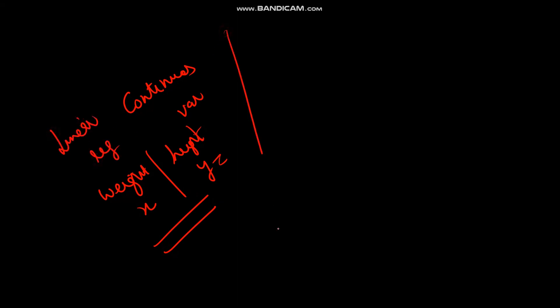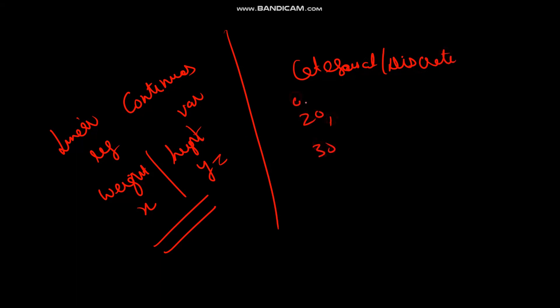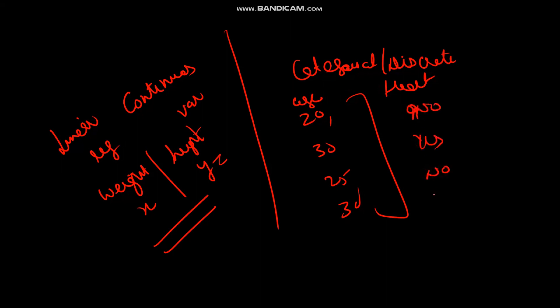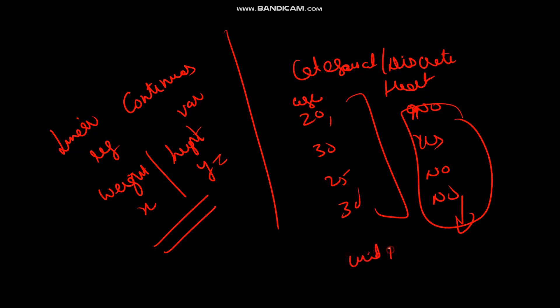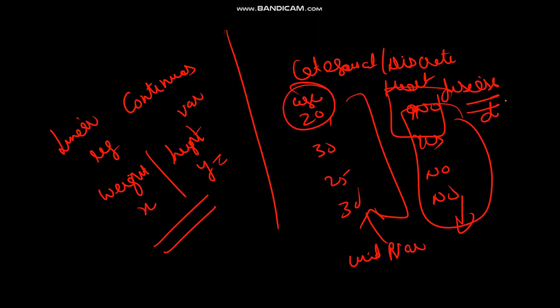To summarize: when we need to predict a continuous variable — such as calculating weight from height, where both are continuous values — we use linear regression. When we have a categorical or discrete variable, such as predicting heart disease (0 for no, 1 for yes) based on age, that is a categorical dependent variable, and in that case we use logistic regression.